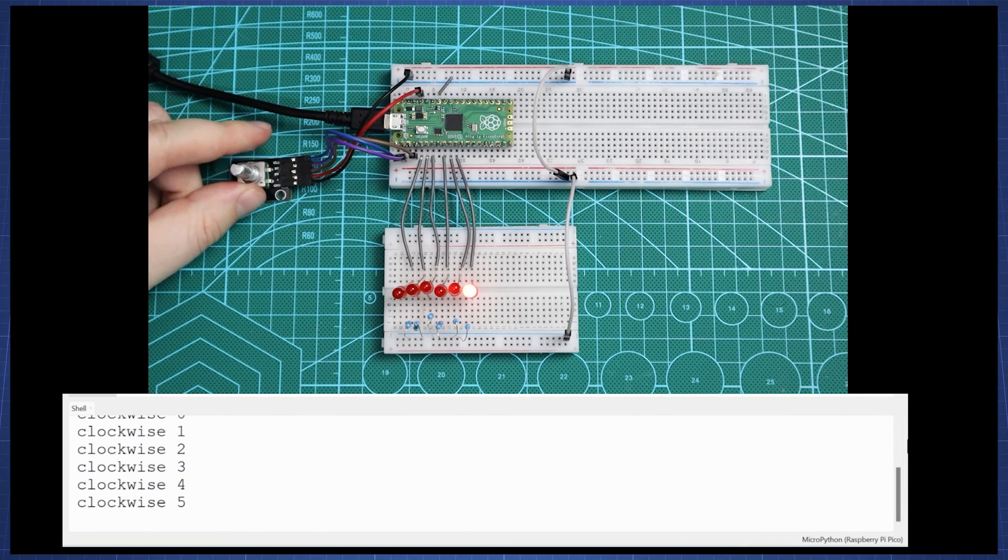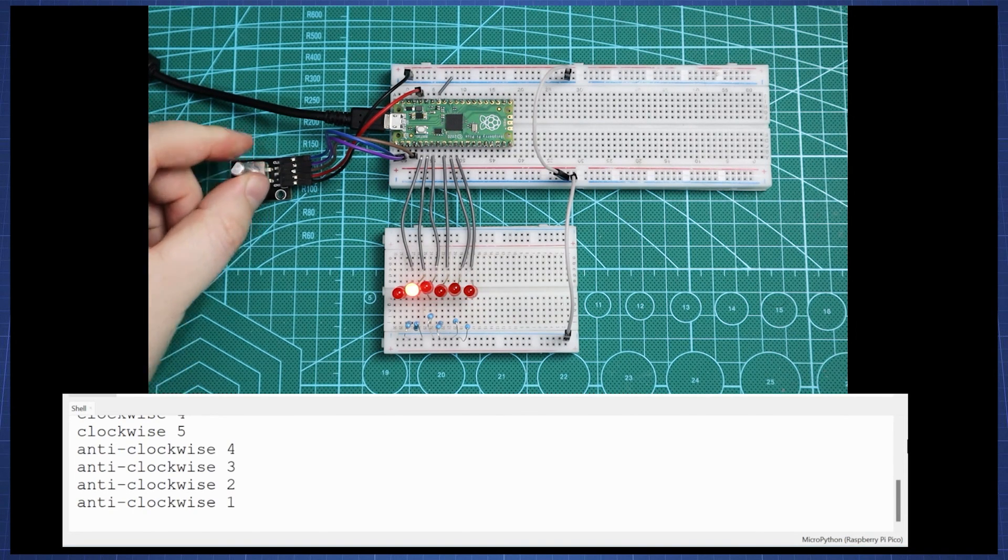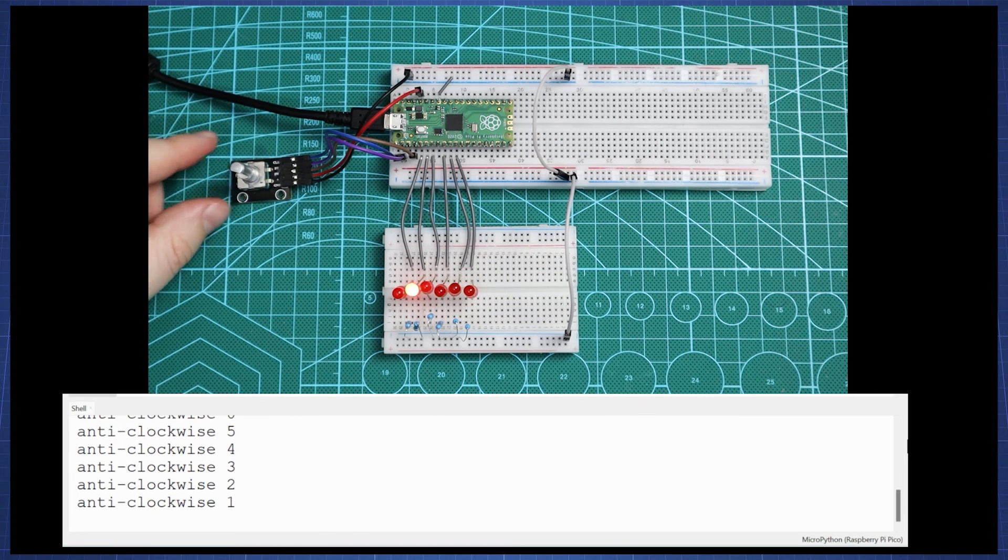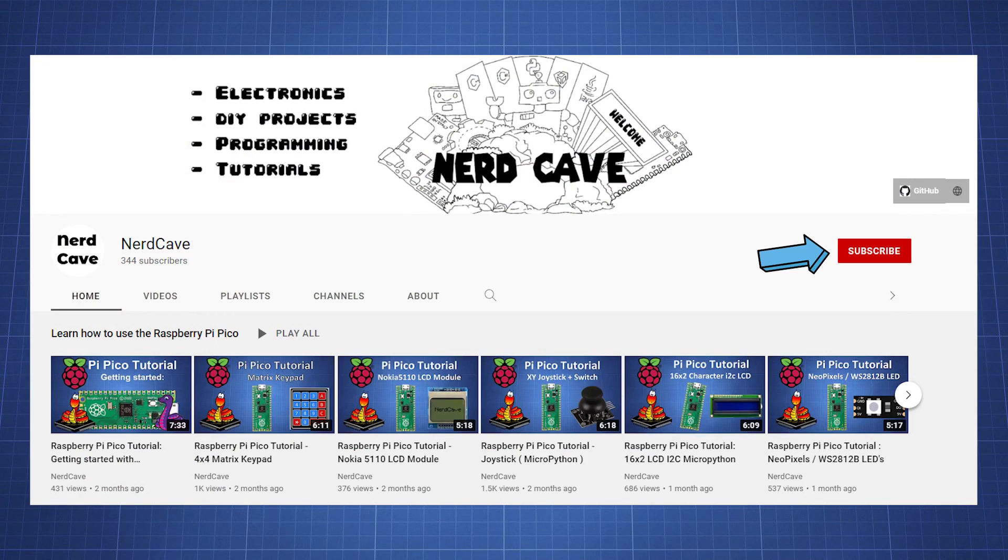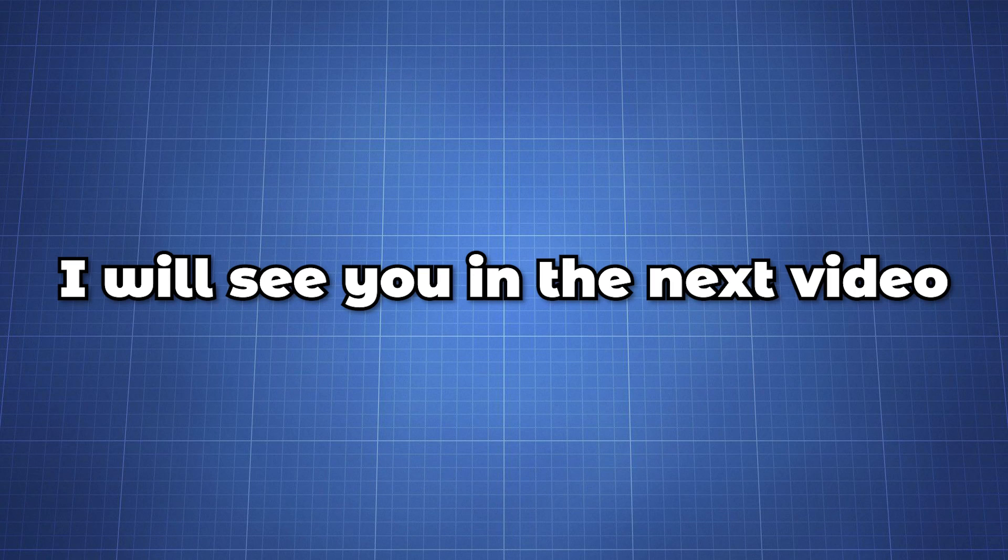That is in short how to set up the rotary encoder. You can use it for many different applications in your projects. I hope you found this tutorial helpful and if you did consider subscribing to the channel for more content on the Raspberry Pi Pico. I will see you in the next video.